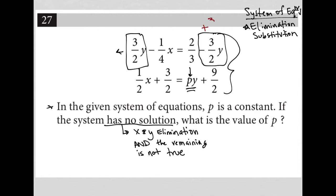I'm going to add three halves Y to both sides of this first equation. Three halves Y plus three halves Y is six halves Y, which would be equal to three Y. So this becomes three Y minus one fourth X equals two thirds.